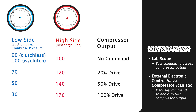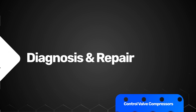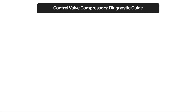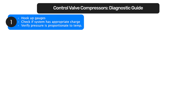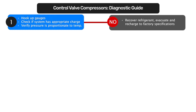The following guide lays out a step-by-step process to narrow down the source of failure. This is a general guide, not to be considered extensive. Always refer to the manufacturer's specifications for all components and equipment used. First, look at the gauges to verify charge and check if pressure is proportionate to temperature. If not, recover and recharge the system to factory specifications.